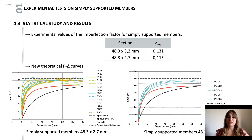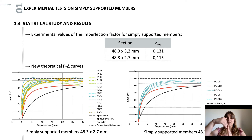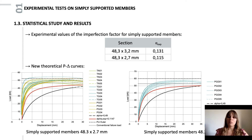The weakness of the test on simply supported members is that they can only measure the initial imperfections affecting an isolated member. However, in a complete structure, other imperfections may occur, such as inclination between vertical components. We therefore launched a second test campaign in the laboratory.